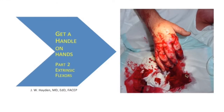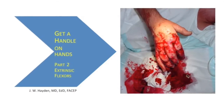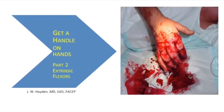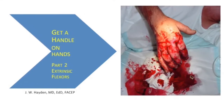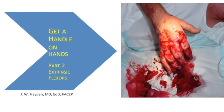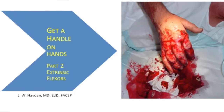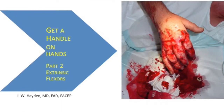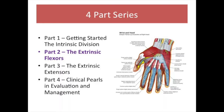Get a Handle on Hands. This is Part 2 of a four-part series that will help you master the musculotendinous system of the hand, which is fundamental to the evaluation and treatment of hand injuries. I am Bill Hayden, an emergency medicine physician, your author and narrator. In Part 1, we identified the three musculotendinous divisions of the hand: the Intrinsic Division, the Extrinsic Flexors, and the Extrinsic Extensors. This presentation focuses on the muscles of the extrinsic flexors.